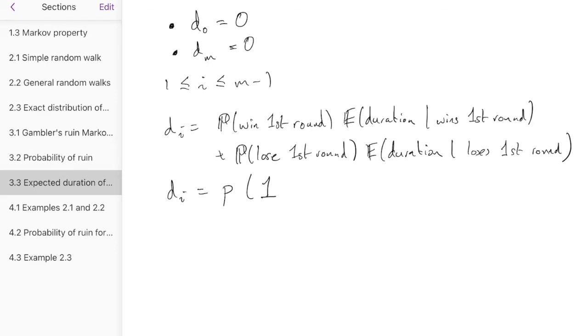And then there's the future duration. And again, by the Markov property, she'll win £1 to go up to i plus 1. By the Markov property, it's like she's starting again from i plus 1 pounds. So that's di plus 1.